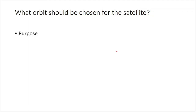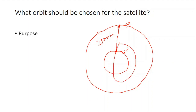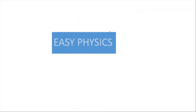The choice of orbit depends entirely on the purpose. For broadcasting, you should use a geostationary satellite at about 35,000 kilometers, with angular velocity equal to that of the earth. For weather monitoring, you should use a polar satellite, which orbits pole to pole while the earth rotates beneath it, sweeping the entire earth's surface approximately every 1.5 hours and collecting data on temperature, pressure, humidity, and other atmospheric factors.